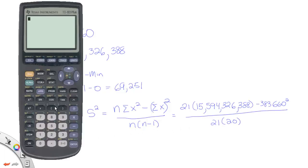So let's show how that's done. Okay, so the first thing I'm going to do is open up a parenthesis. Then I'll type 21 times. And then I have to type in the 15,594,326,388 minus the 383,660.